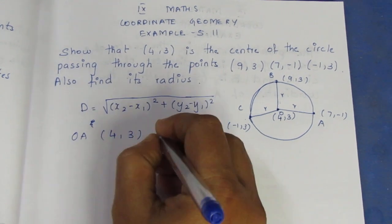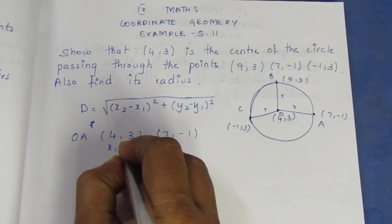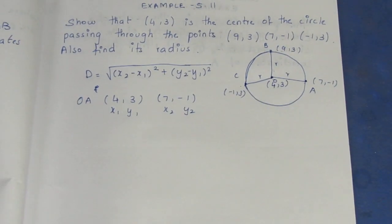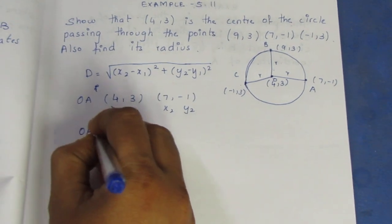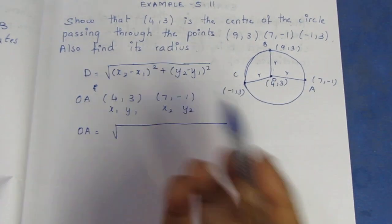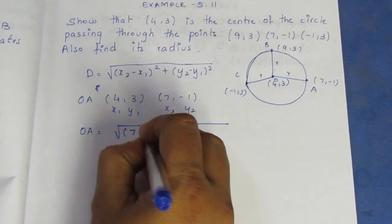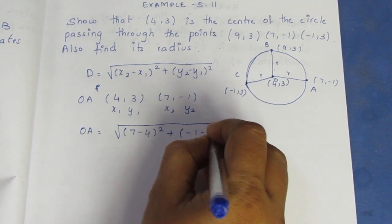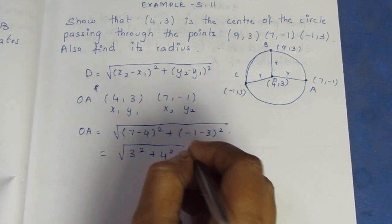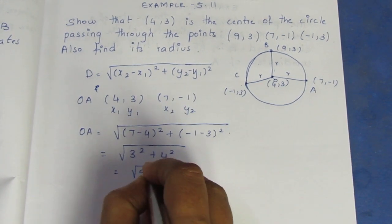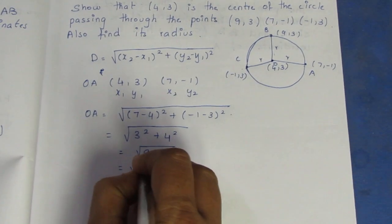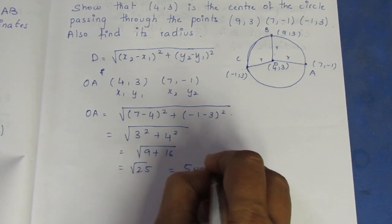For OA: the root of 3 squared plus 4 squared — the root of 9 plus 16. 3 squared is 9, 4 squared is 16. Root of 25. So OA comes to 5 units.